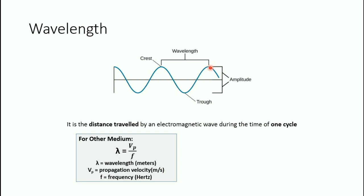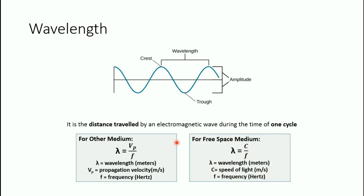For wavelength, we have the following formulas. For other media, lambda equals vp over f, where lambda is the wavelength expressed in meters, vp is the propagation velocity in meters per second, and f is the frequency in hertz. Since we discussed that when free space is used as the medium, propagation velocity equals the speed of light, the wavelength in free space simplifies to: wavelength equals the speed of light over frequency.